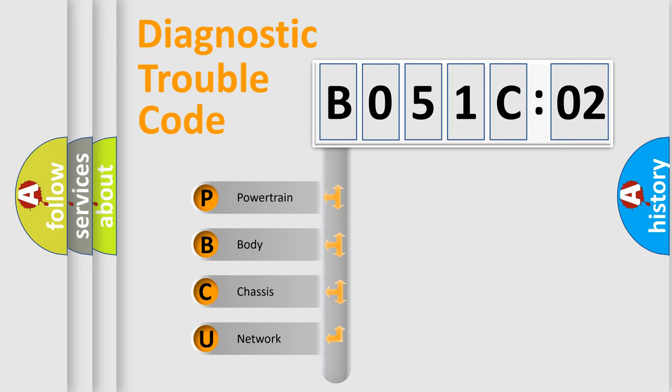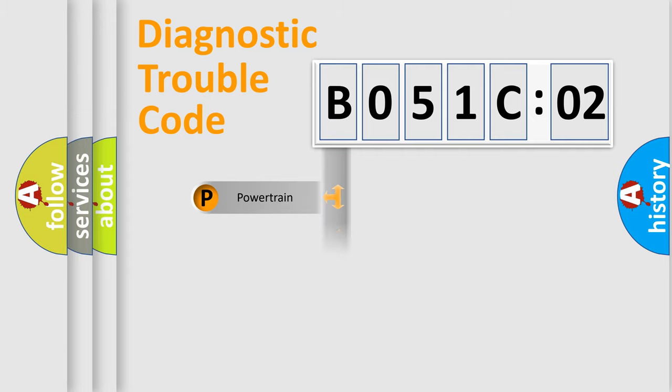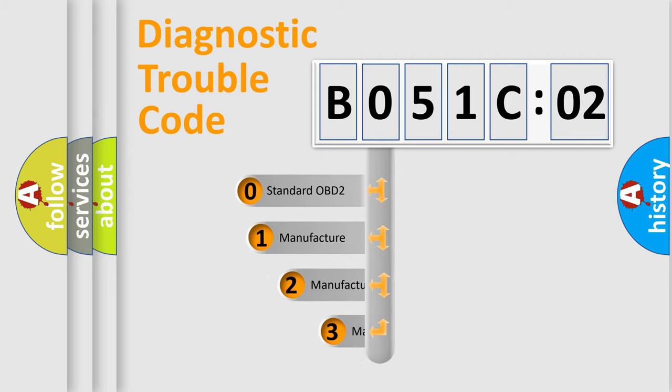We divide the electric system of automobile into four basic units: Powertrain, Body, Chassis, and Network. This distribution is defined in the first character code.